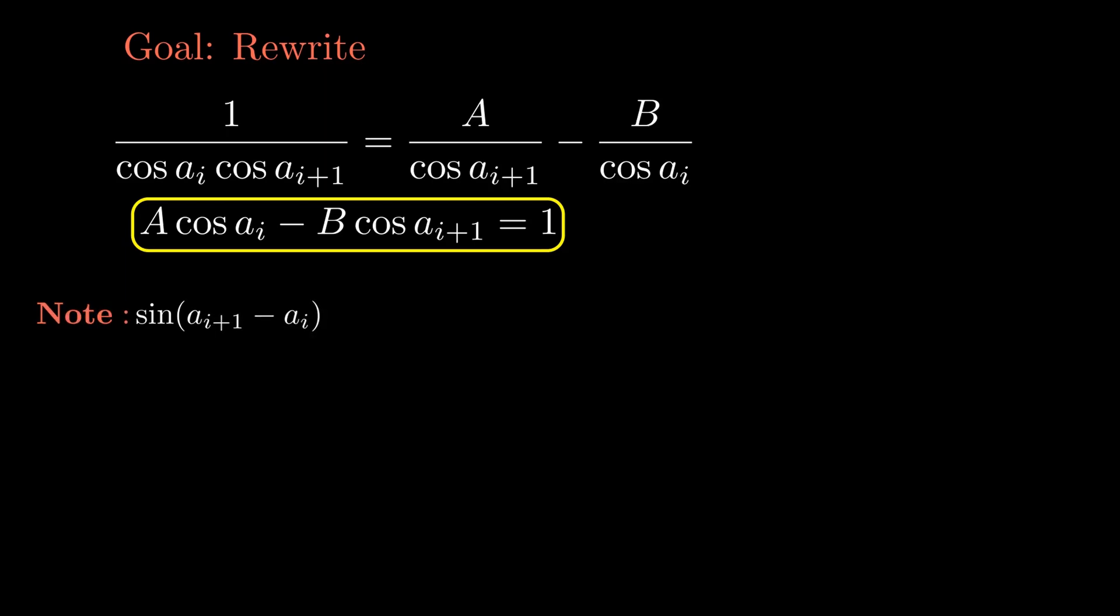And here we see that this seems similar to the expansion of sine of (aᵢ₊₁ - aᵢ), which is equal to sine aᵢ₊₁ times cosine aᵢ minus sine aᵢ times cosine aᵢ₊₁. But we have to tweak it a little bit so that this whole thing is always equal to 1. And this is where we note that aᵢ₊₁ minus aᵢ is always equal to d.